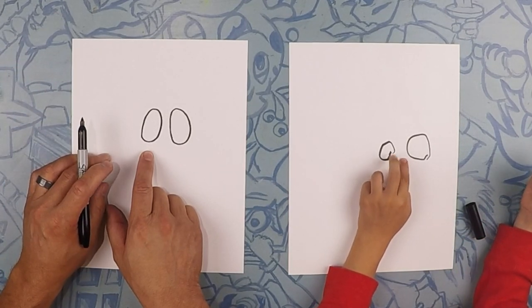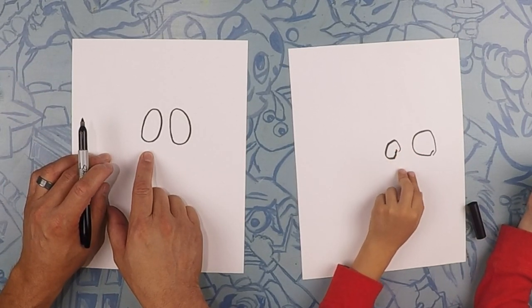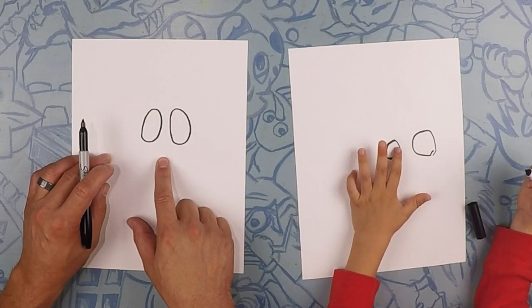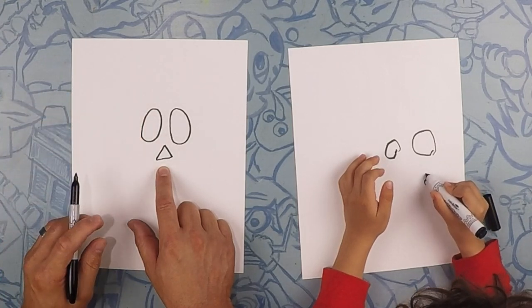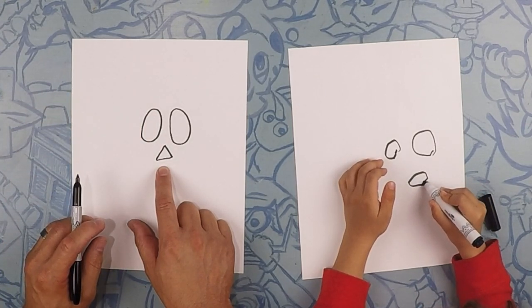But these are like people eyes. Yeah, those look like people eyes, but it's okay. Right here in the middle, we're going to draw a triangle. Can you draw a triangle like this? Yeah. Good.